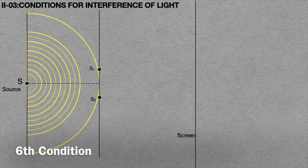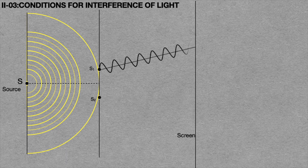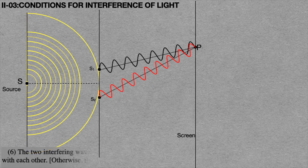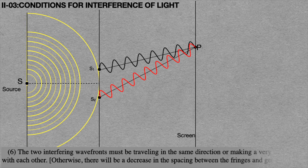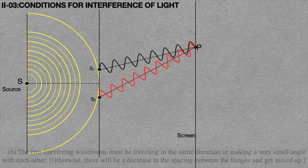The sixth condition is shown in this animation. If the light waves from sources S1 and S2 form an interference pattern at point P on the screen, then the wavefronts of the interfering waves must be travelling in the same direction or making a very small angle with each other. This animation clearly shows two waves propagating with a small angle between them.